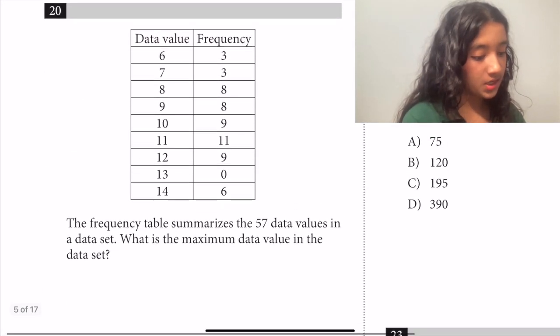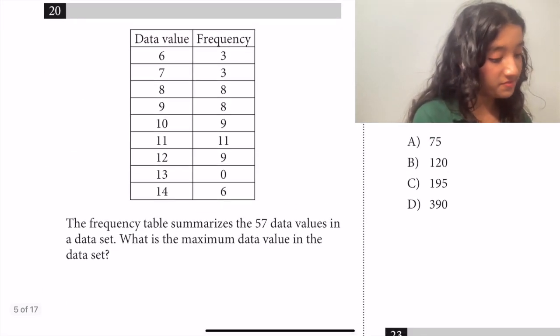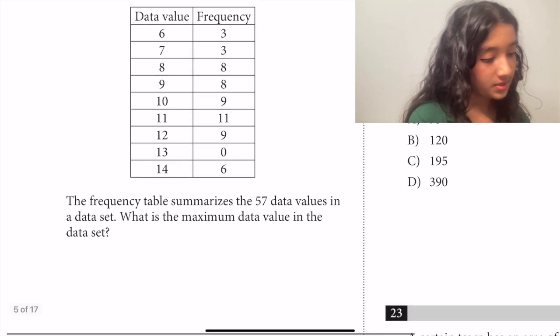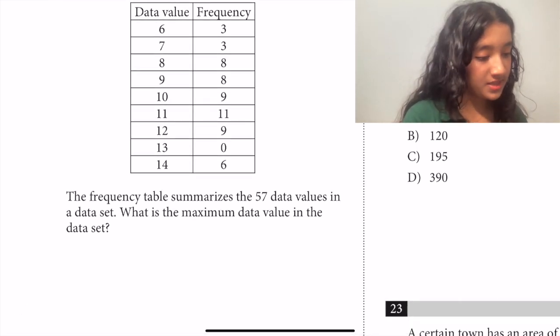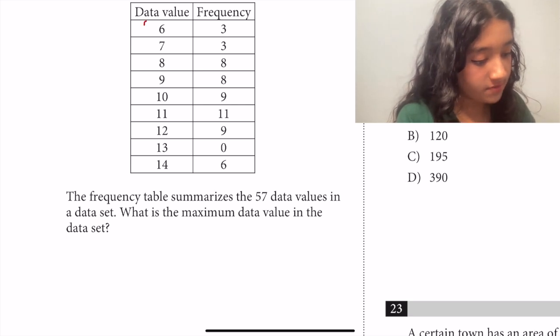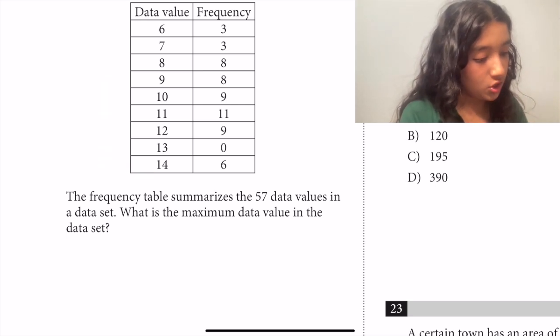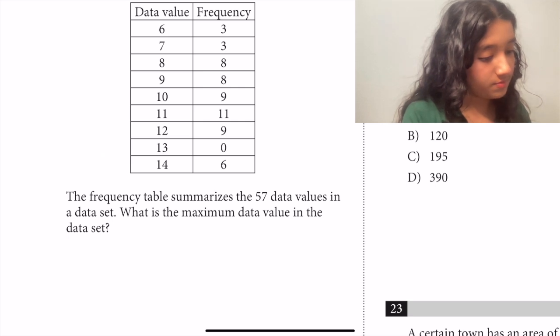Moving on to question 20. The frequency table summarizes the 57 data values in a data set. What is the maximum data value in the data set? So we're just looking for the maximum, which means that out of our data values here we just want to see the largest one. So in this case that's data value of 14.